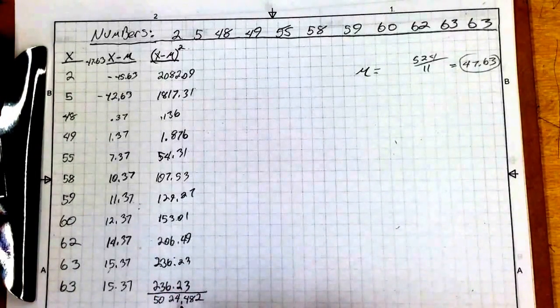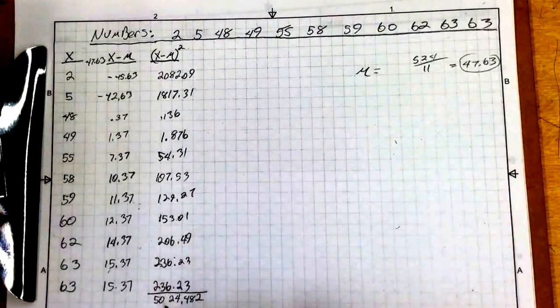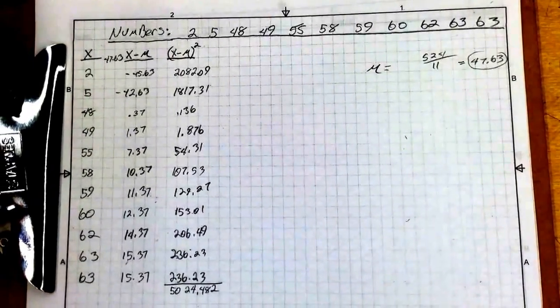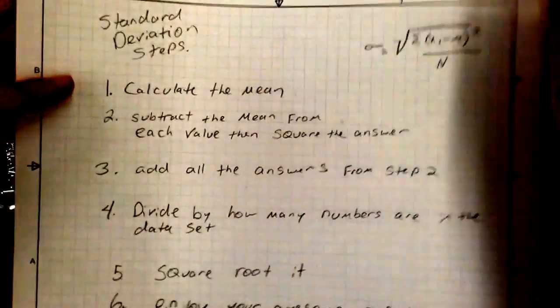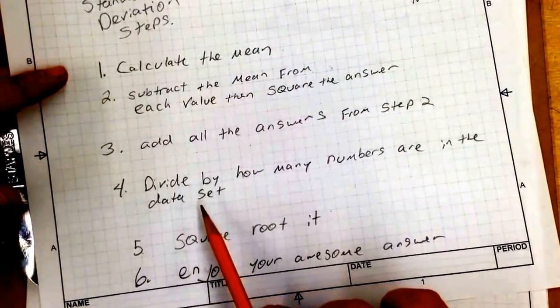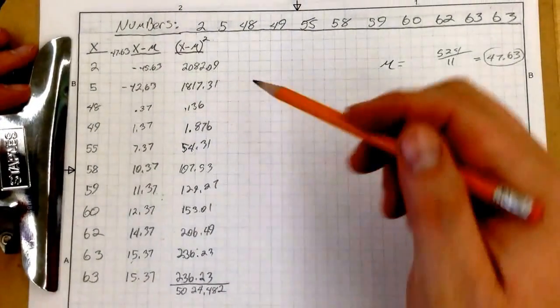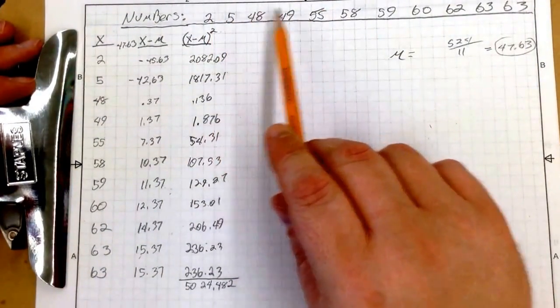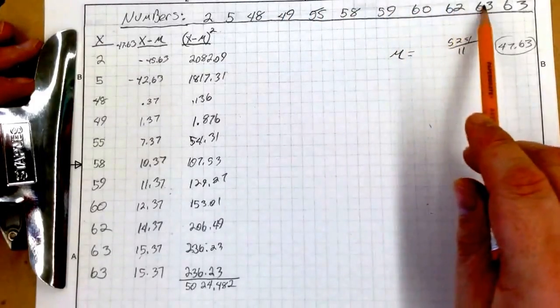This is not your answer yet. So don't get all excited. This is not your answer. If we check out these steps, we have to then divide by how many numbers are in the data set. So we have 1, 2, 3, 4, 5, 6, 7, 8, 9, 10, 11.